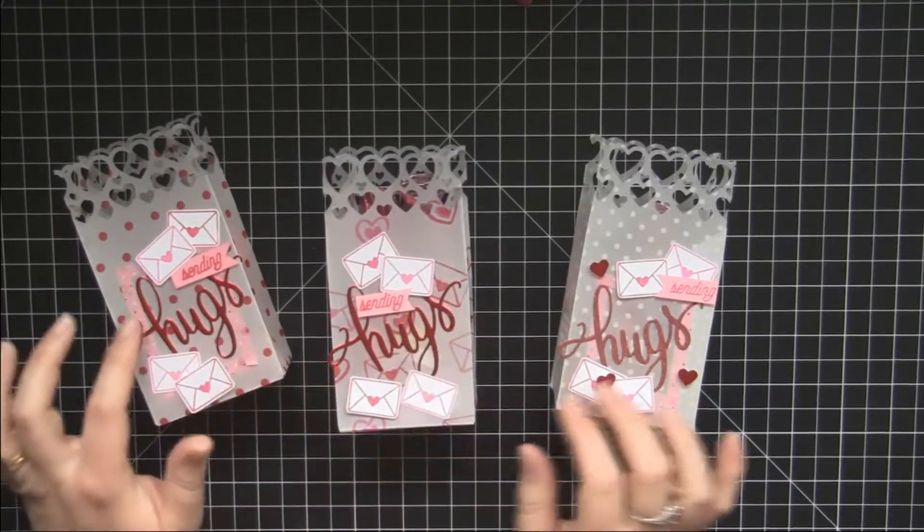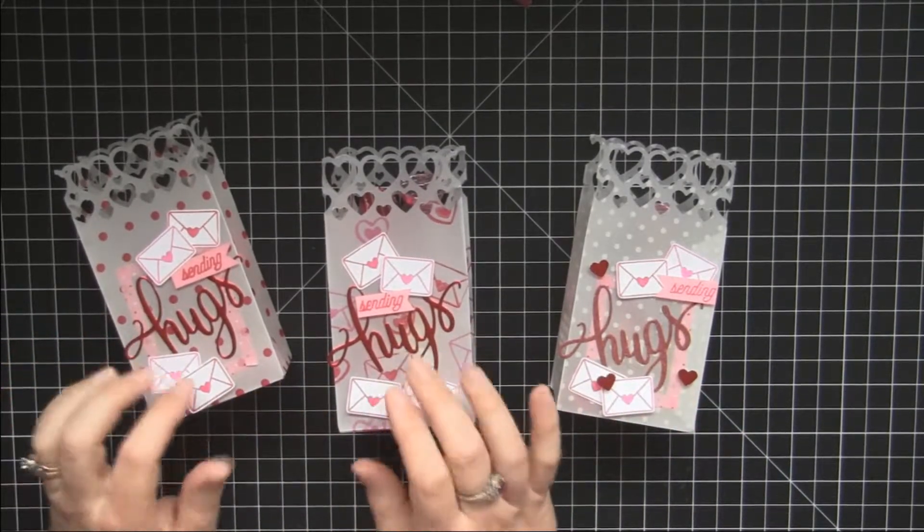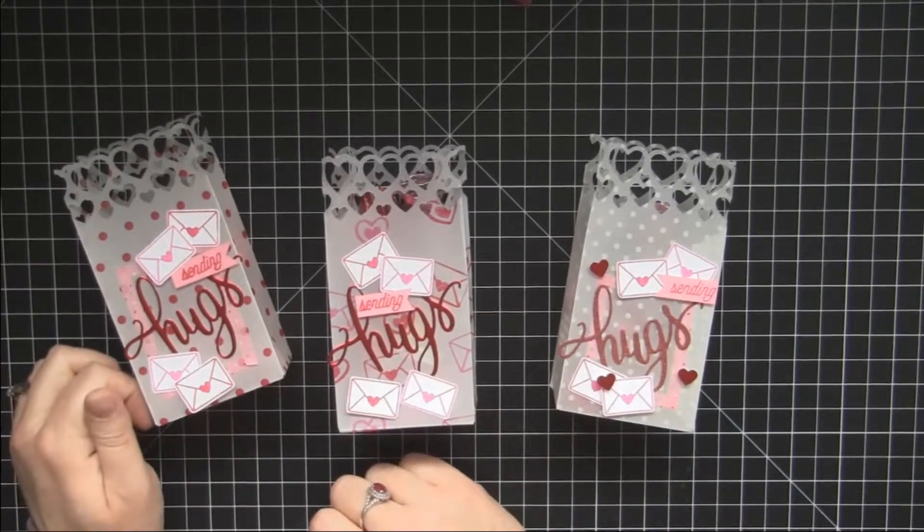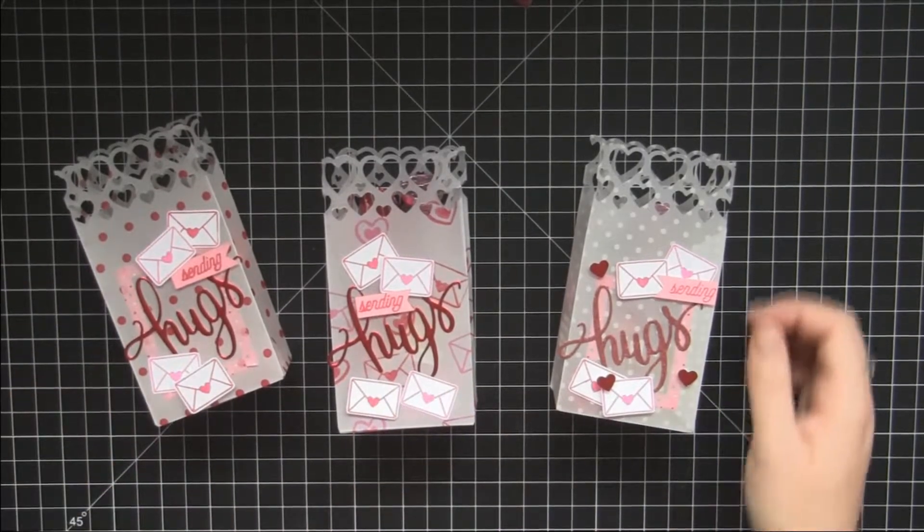Then I took some foil lettering and cut out the word hugs and stamped some envelopes and used those as my embellishments.